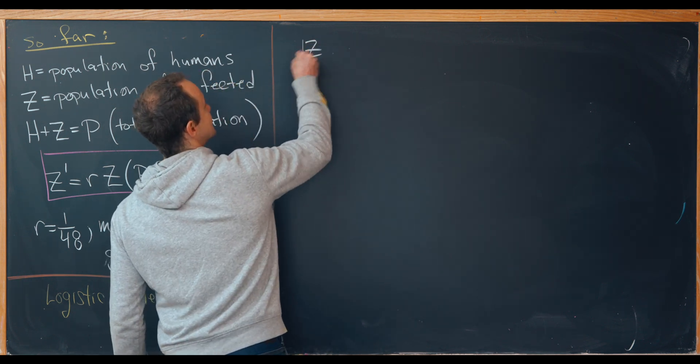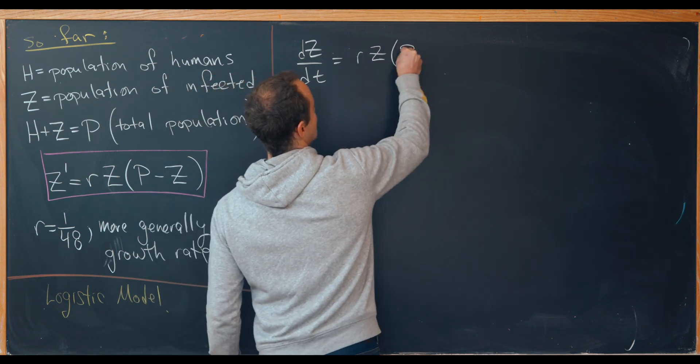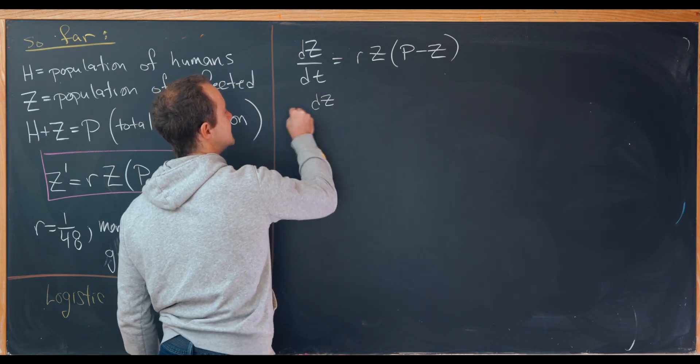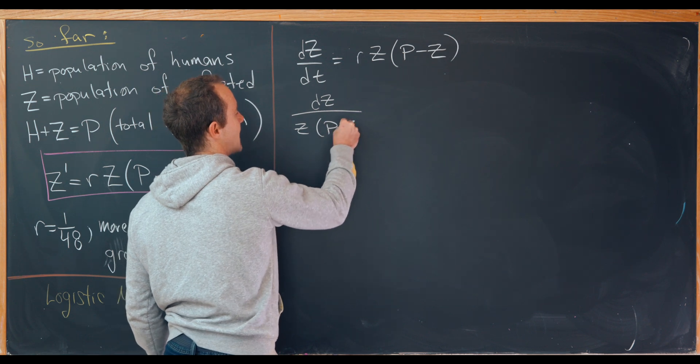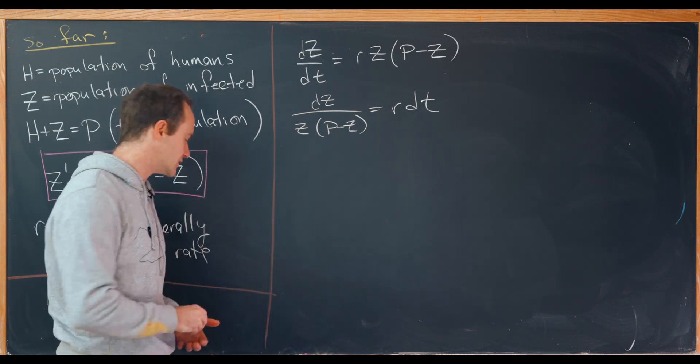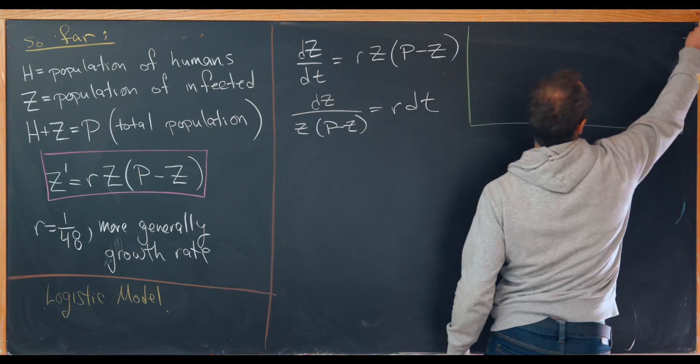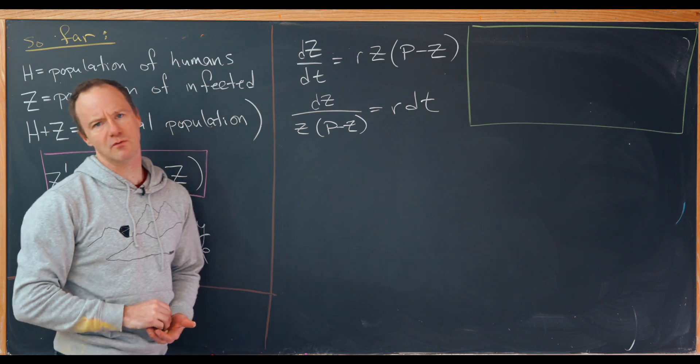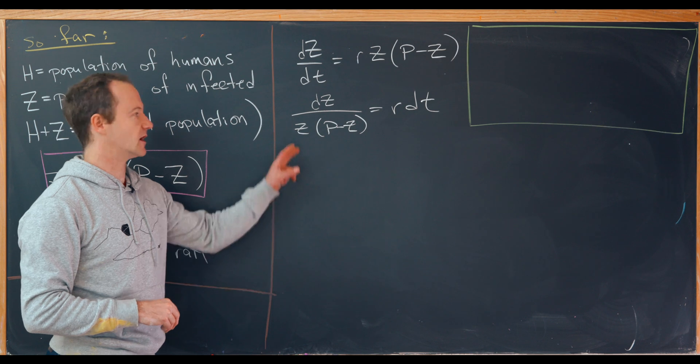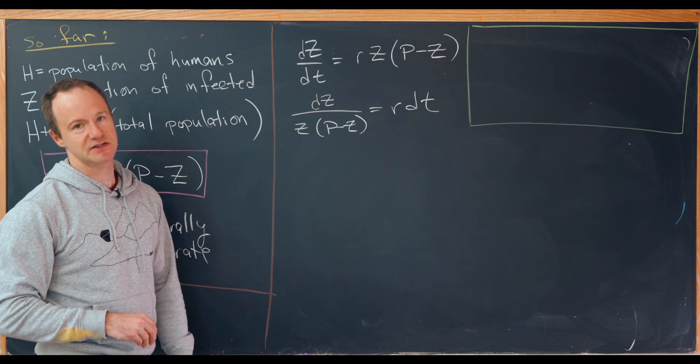So we can write dZ by dt equals R times Z times P minus Z. And then, moving some things around, we get dZ over Z times P minus Z equals R dt. And so we're abusing notation here. But this is the typical way to do this when we're talking about separation of variables. And it's not problematic because you can also do it more carefully and get the same sort of solution. Now we'll integrate both sides. The left-hand side with respect to Z. And then the right-hand side with respect to T.